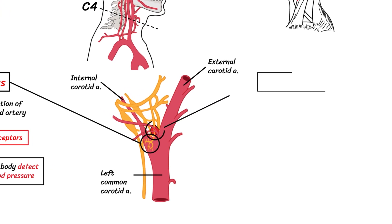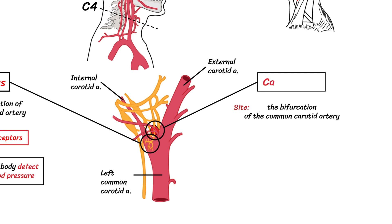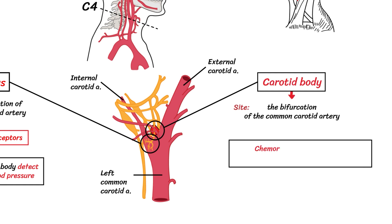At the bifurcation of the common carotid artery, there is also the carotid body, a chemoreceptor important in maintaining oxygen levels in the blood.